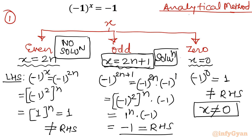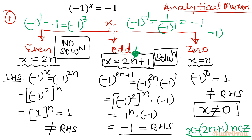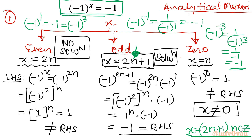How many solutions? It depends on the value of n, where n is an integer, so there are infinitely many solutions. We write x equal to 2n plus 1, where n belongs to Z (integers). You can check: minus one raised to the power one is minus one; minus one raised to odd powers like three, five, minus one, minus three all equal minus one. For example, minus one raised to minus one equals one over minus one raised to one, which is minus one. All odd powers satisfy our equation minus one raised to x equal to minus one.